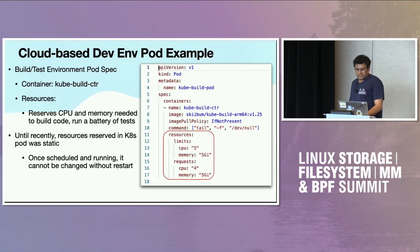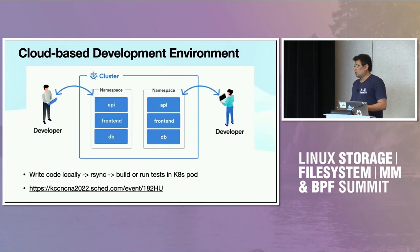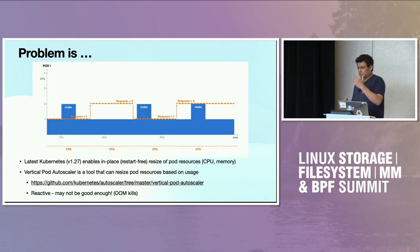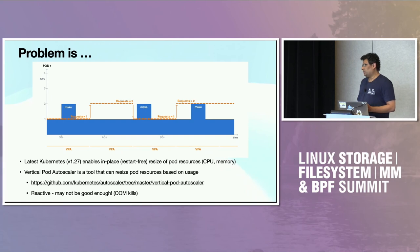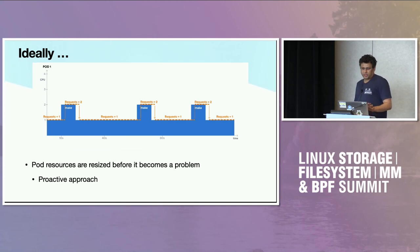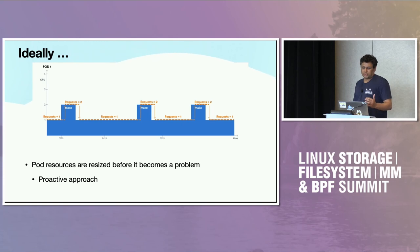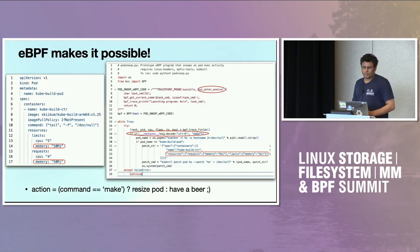This cloud-based dev environment use case is different from a normal NGINX or database pod. It's very spiky in nature — your resource level is at one when you're not using the system, but the moment you hit a make command, you'll need a lot more memory and CPU. By the time Vertical Pod Autoscaler reacts, the process may get OOM-killed because you're exceeding your reserved quota. What we ideally want is a proactive approach — when you see the make command, increase capacity to what the build system or tests need, ensuring things continue to work well for the duration of the test run. This is where eBPF comes in.